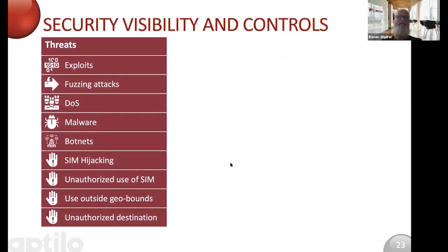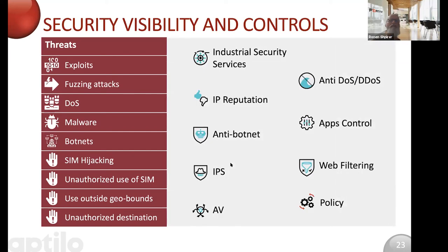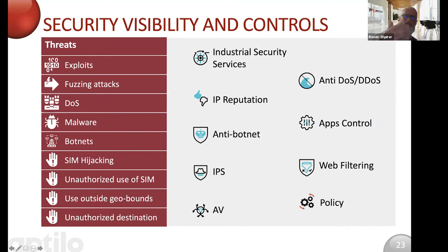The second thing to understand is that there are multiple types of attacks — there is no one magic solution. There is no single technology, like IP reputation alone, that solves everything. Multiple mechanisms have to be put in place to allow the flexibility to discover, mitigate, and protect against these types of threats in an IoT ecosystem. The beauty of the joint Aptilo and Fortinet solution is that you have these capabilities in a very agile, automated, customer self-managed way.